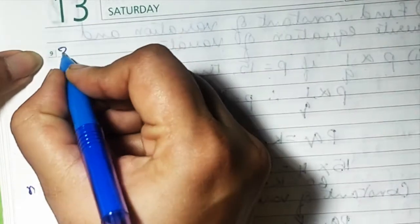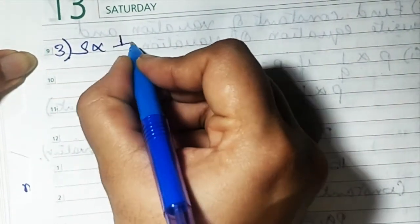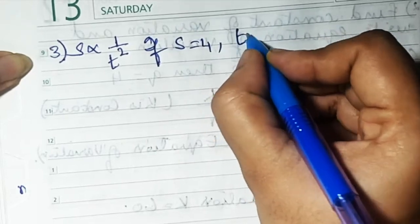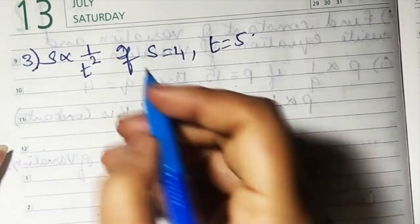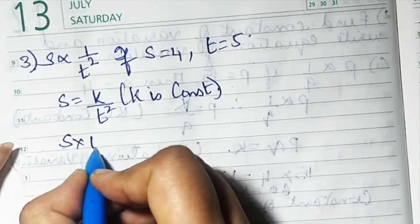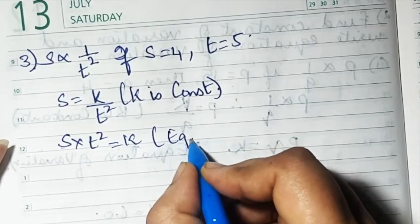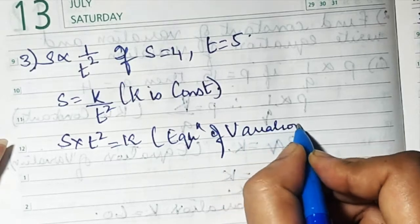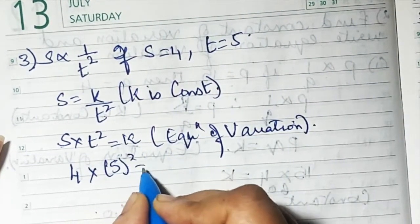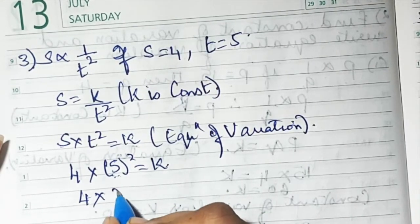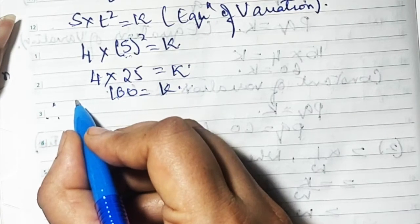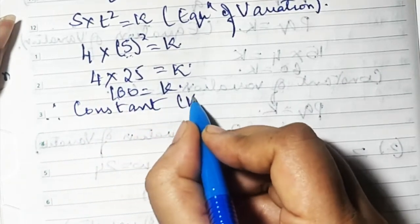Sum number 3: s is inversely proportional to 1 upon t squared; s equals 4 and t equals 5. So s equals k upon t squared, meaning s into t squared equals k — that is the equation of variation. Substituting: 4 into 5 squared equals k, which is 4 into 25 equals 100. Therefore, the constant of variation k is equal to 100.